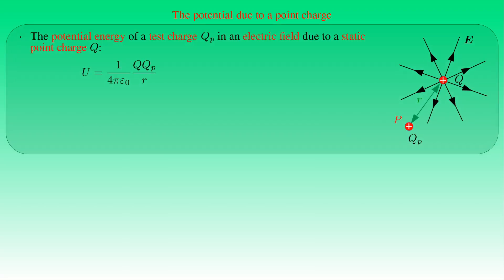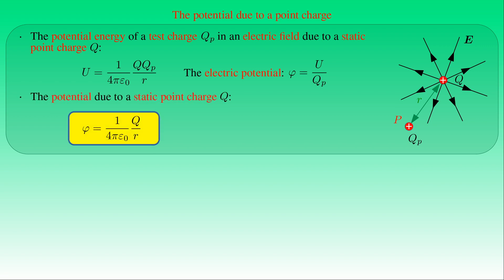We now determine the electric potential due to a point charge. The potential energy U of a test charge QP at point P in the field due to point charge Q is (1/4πε₀) × Q·QP/R. Since the potential is defined as the ratio of potential energy to the amount of charge, the potential φ due to point charge Q at point P is (1/4πε₀) × Q/R, where R is the distance from P to Q.